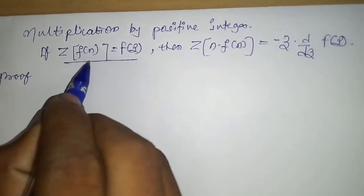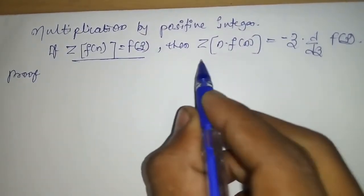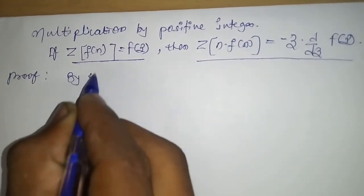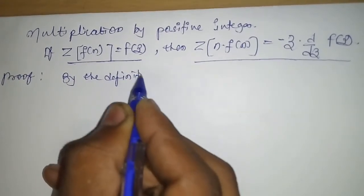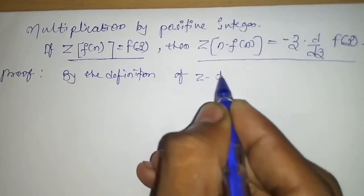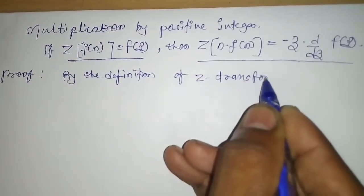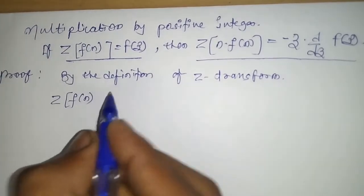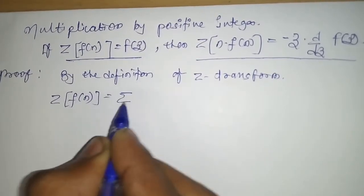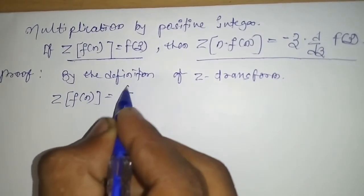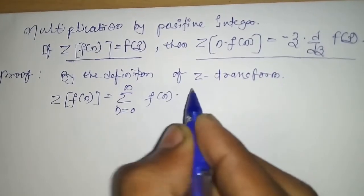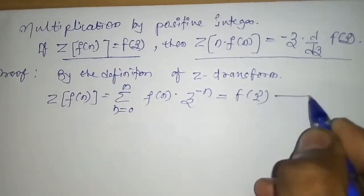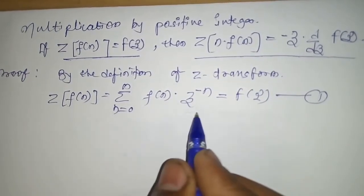This is the standard property of Z-transform that we have to prove here. In proof, by the definition of Z-transform, Z of F of M is equal to summation N equal to 0 to infinity, F of N, Z to the power minus N, equal to F of Z. This is Equation 1, the standard definition of Z-transform.